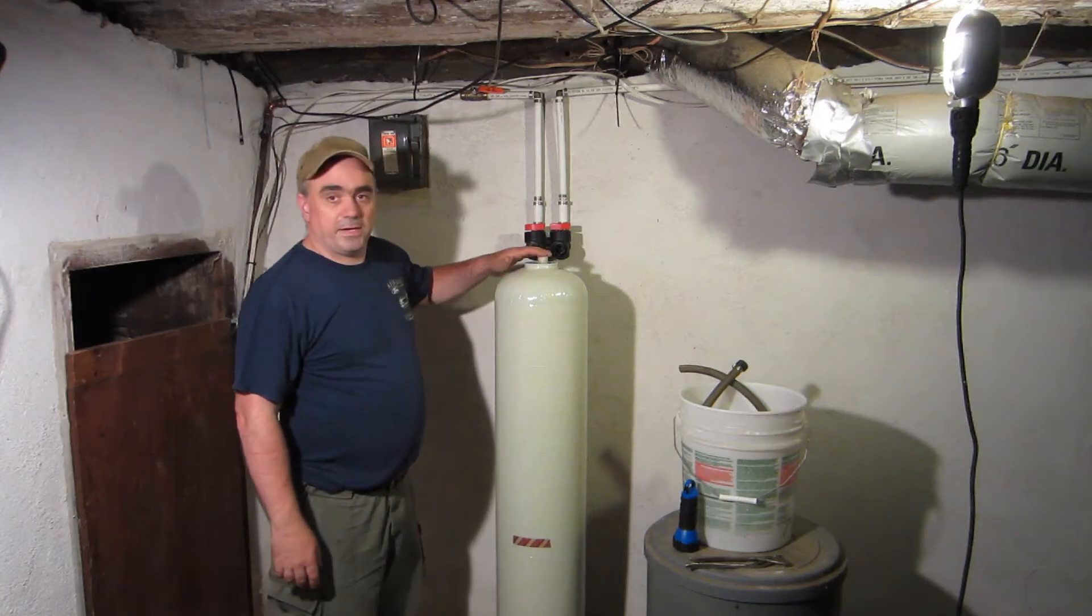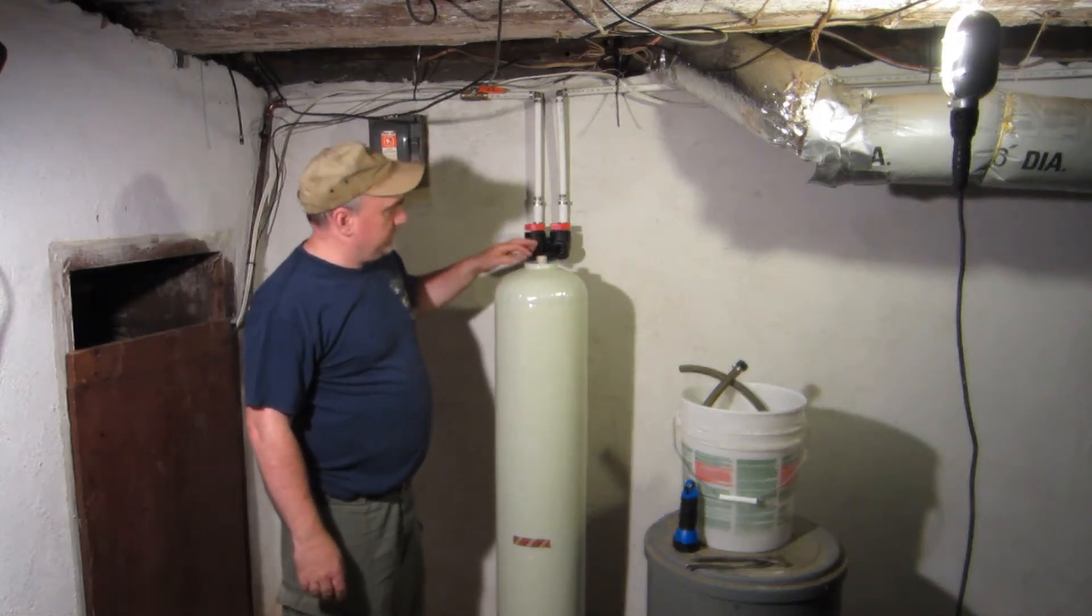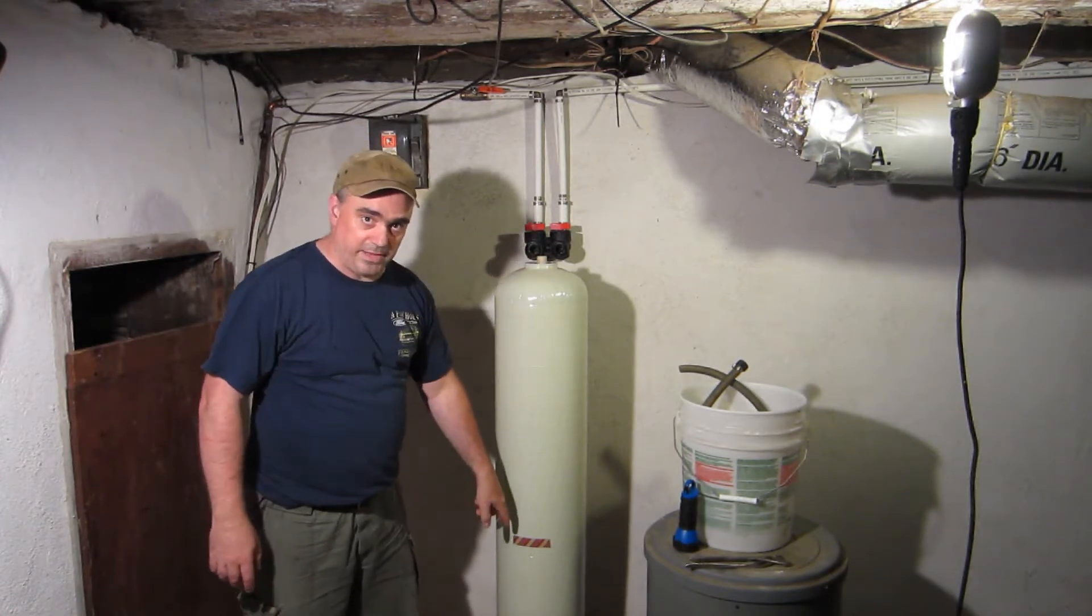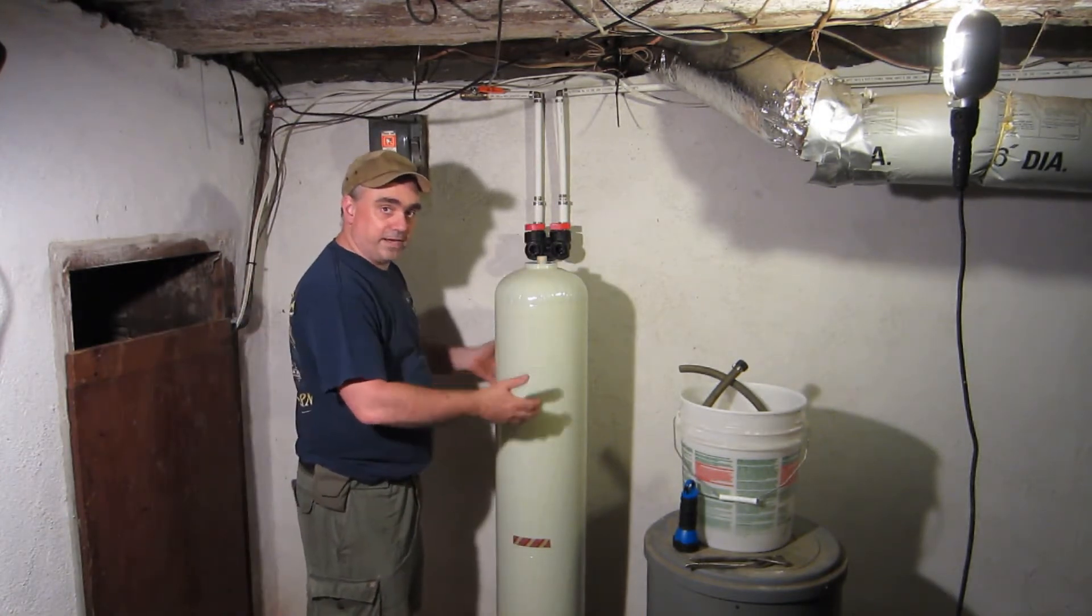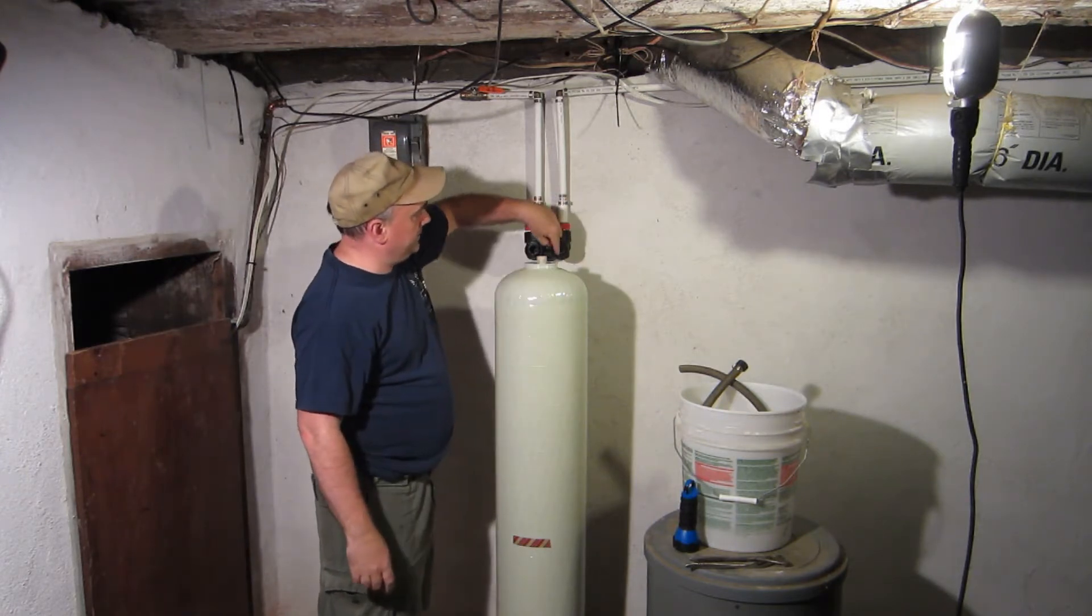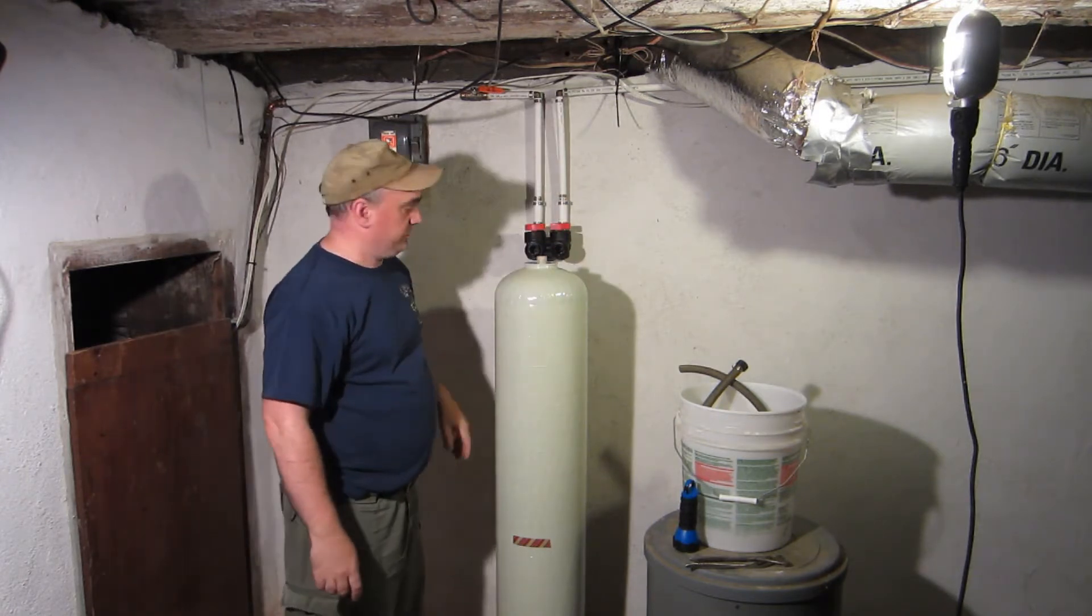Okay, so this pipe that's sticking up is what the water comes in and it goes down this pipe and it goes down to the bottom of the tank and then the water filters back up through the calcite medium and then it comes back up into the head and out through the pipe that goes into the house.